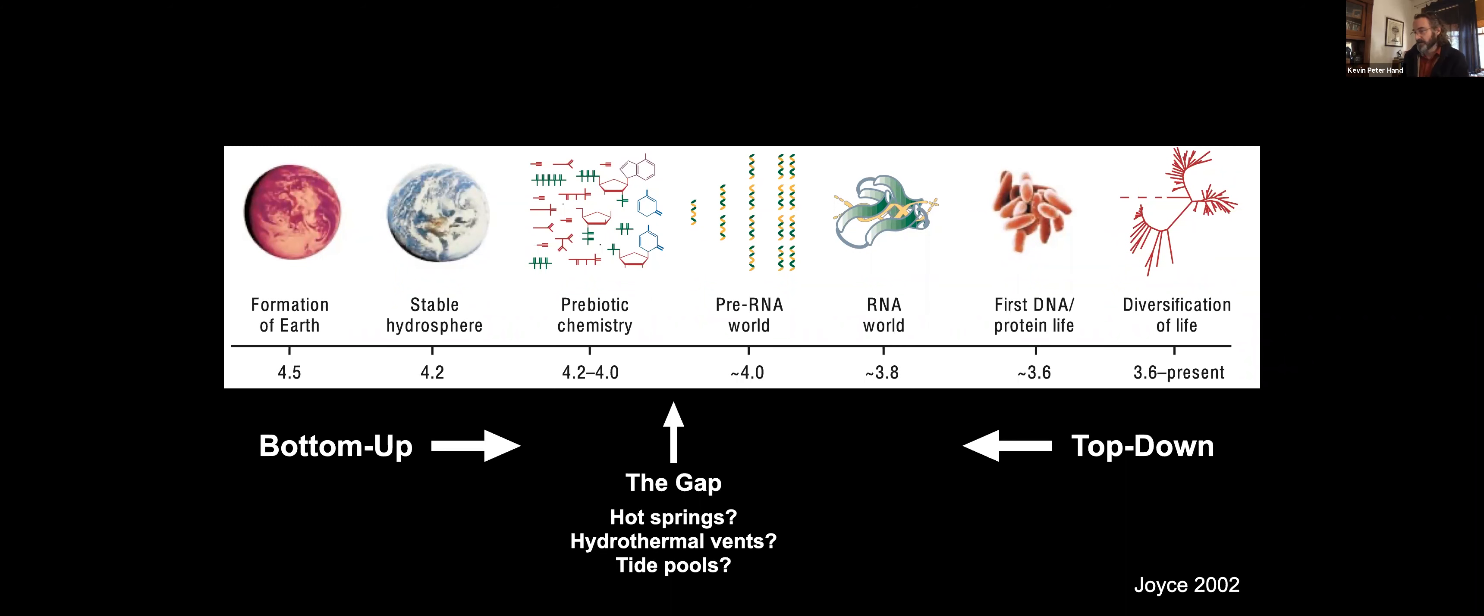And what we find is that there's this gap with respect to understanding exactly how and where life may have originated. I would say, and I think many of my colleagues would agree, that for the most part we can distill that gap from an environmental level down to just a few locales, a few suspect sites on the early Earth or other places. Hot springs, places like Yellowstone that may have formed on some of the earliest continents, hydrothermal vents in the bottom of our Archean oceans, or tide pools on the shores of ancient oceans.